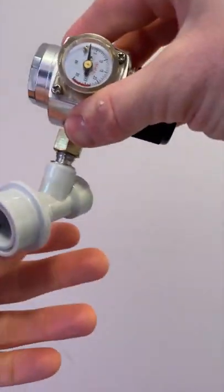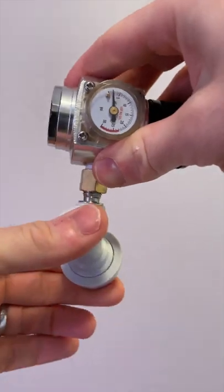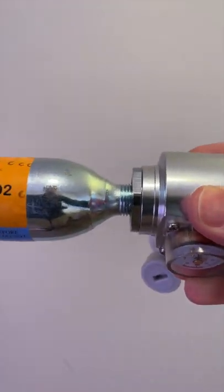The assembly is quite simple. You first need to screw the gray quick connect into one end and then quickly screw the threaded CO2 cartridge into the regulator.